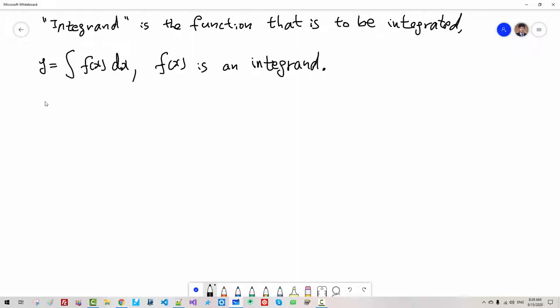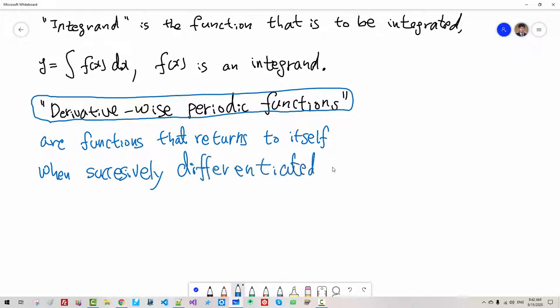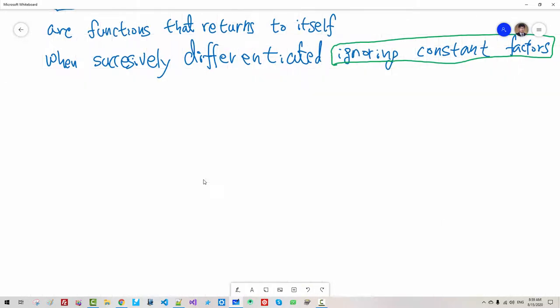Now let me define derivative-wise periodic functions. In mathematics, there is no such term as derivative-wise periodic functions. I defined this term. Derivative-wise periodic functions are functions that return to themselves when successively differentiated, ignoring constant factors. Please pay attention to ignoring constant factors.